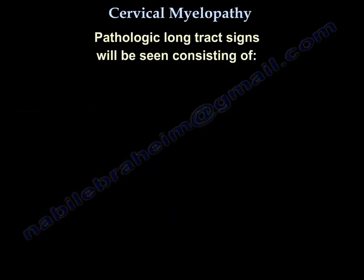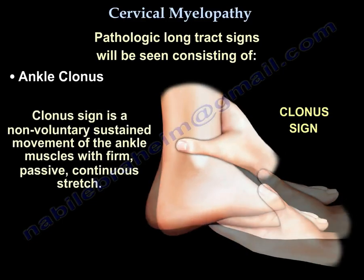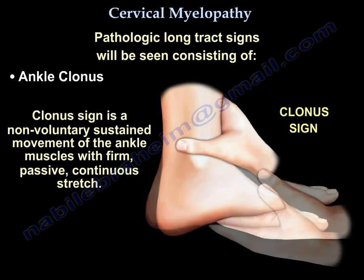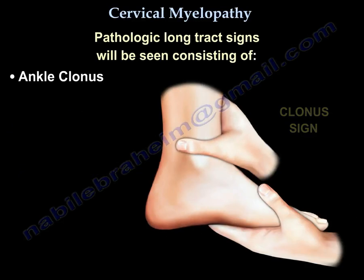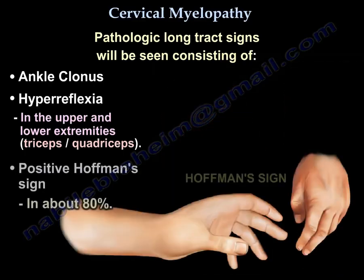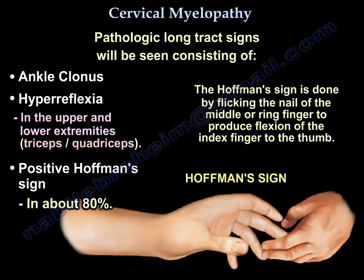Pathologic long tract signs will be seen, consisting of ankle clonus — a non-voluntary sustained movement of the ankle muscles with firm passive continuous stretch. Hyperreflexia in the upper and lower extremities in the triceps and quadriceps. Positive Hoffmann sign in about 80%: the Hoffmann sign is done by flicking the nail of the middle or ring finger to produce flexion of the index finger to the thumb.